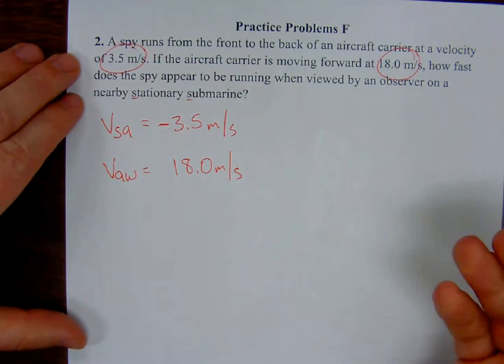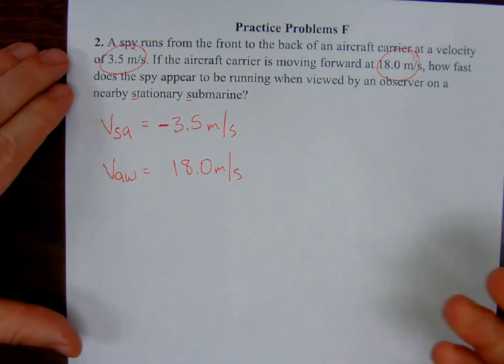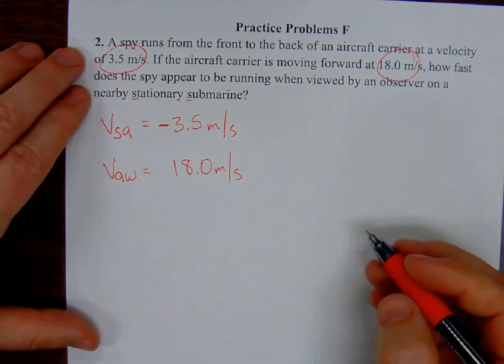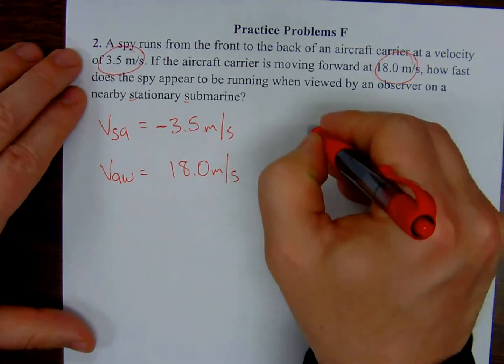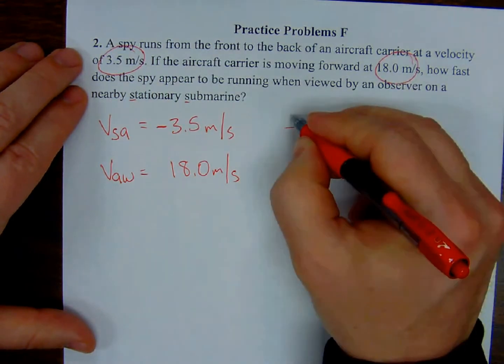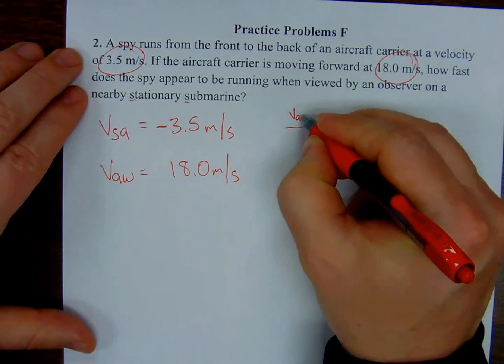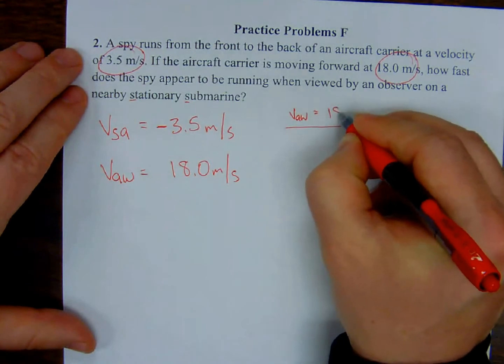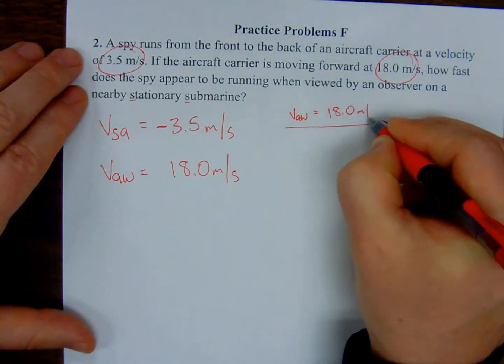So the velocity of the aircraft carrier with respect to water is 18.0 meters per second. And the spy is running this way. So the velocity of the spy with respect to the aircraft carrier is 3.5 meters per second.